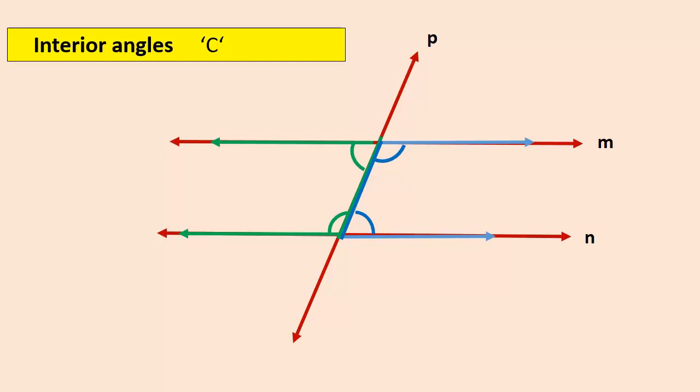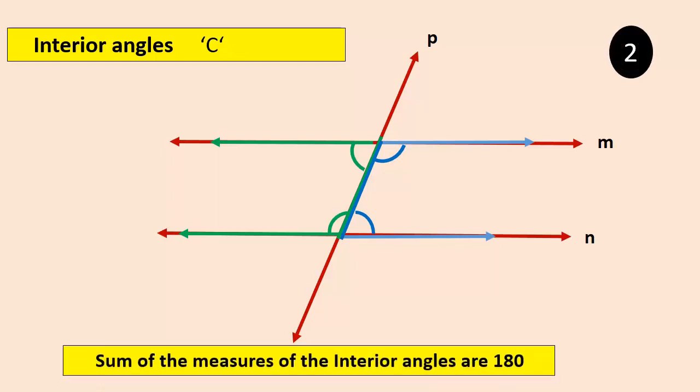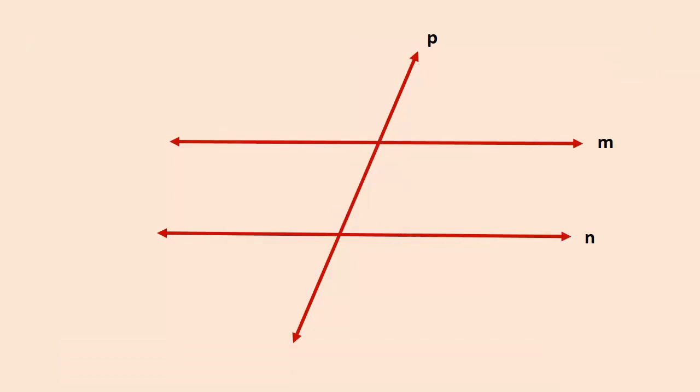So what are interior angles? A pair of angles which are on the same side of the transversal. Now what is the most important property? This interior pair of angles are supplementary. That is, the sum of their angles is 180 degrees. In all, there are two pairs of interior angles.